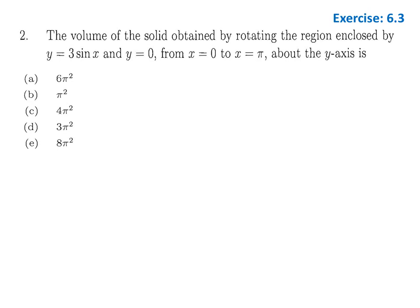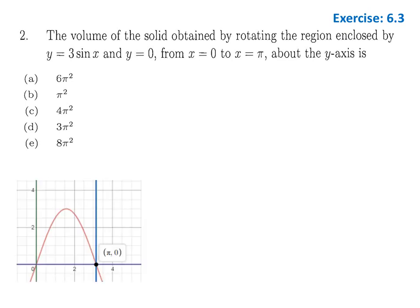First we draw the picture. We have to rotate the region about the y-axis, which is vertical. Using the cylindrical shell method, integration is with respect to x because the axis of rotation is vertical. From the diagram, the radius is the x-direction of the curve (just x) and the height is the y-component of the curve.